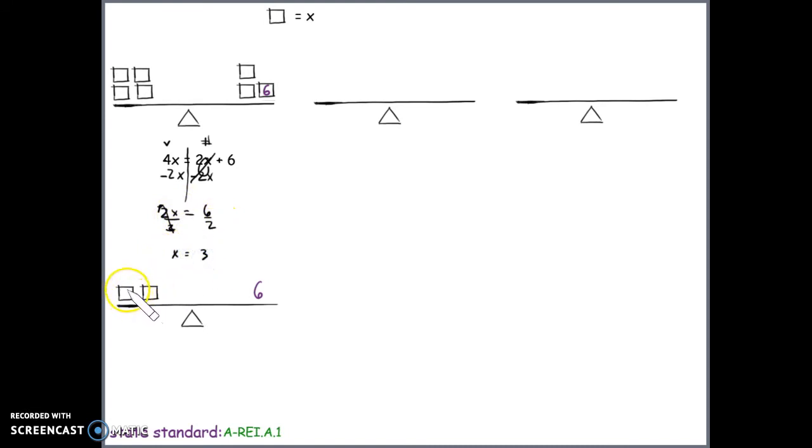And we knew that before we even solved using our inverse operations that 3 plus 3, or 3, is the only value added to itself that equals 6. So all of these boxes are actually a 3, and this is the only value that balances the scale or makes both of the expressions equal each other. So here's an example of an equation that has only one answer and the solution set x equals 3.